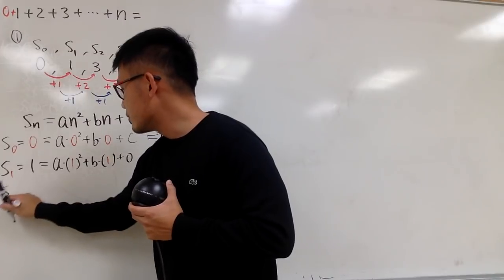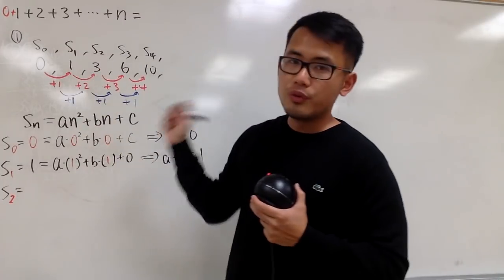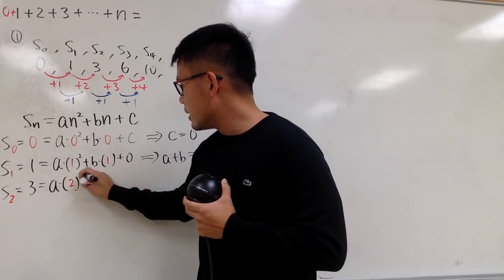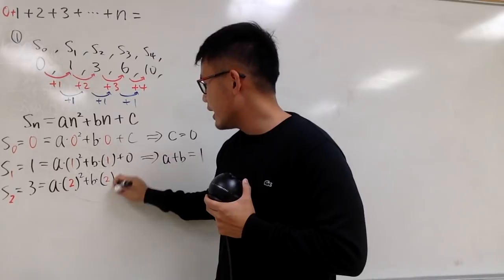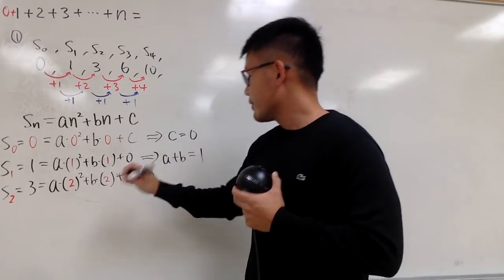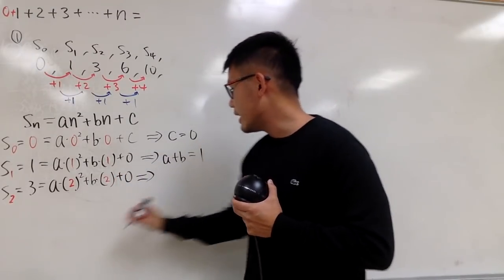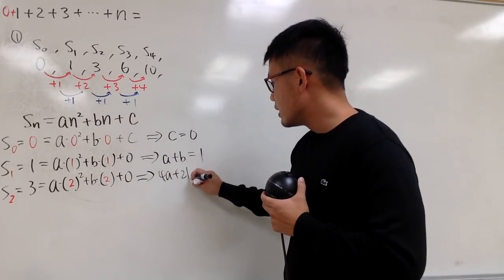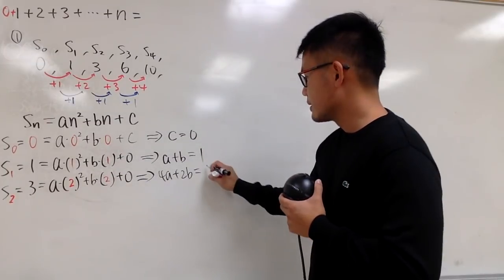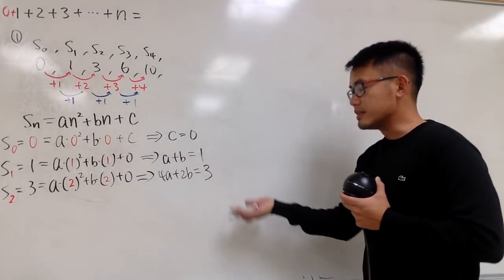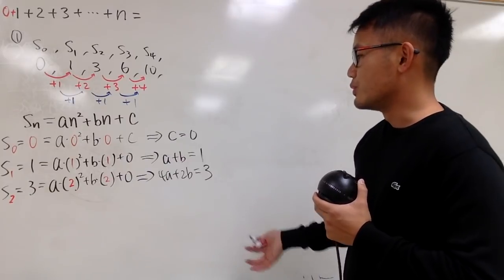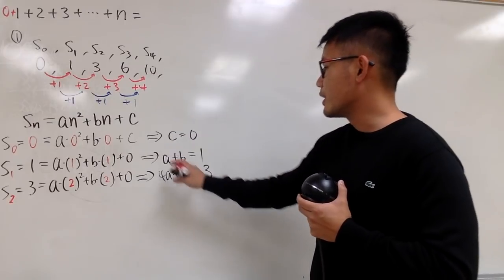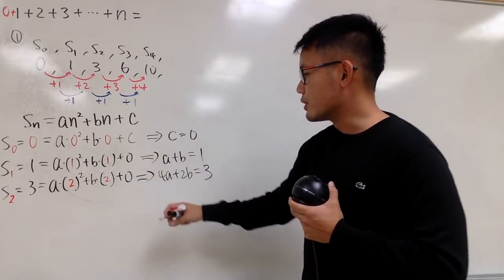Now S2: we get 3. That means a times 2 squared plus b times 2, and c is 0 already. So 4a plus 2b equals 3. This is now a system of equations, so we can multiply the first equation by negative 2 to eliminate b.